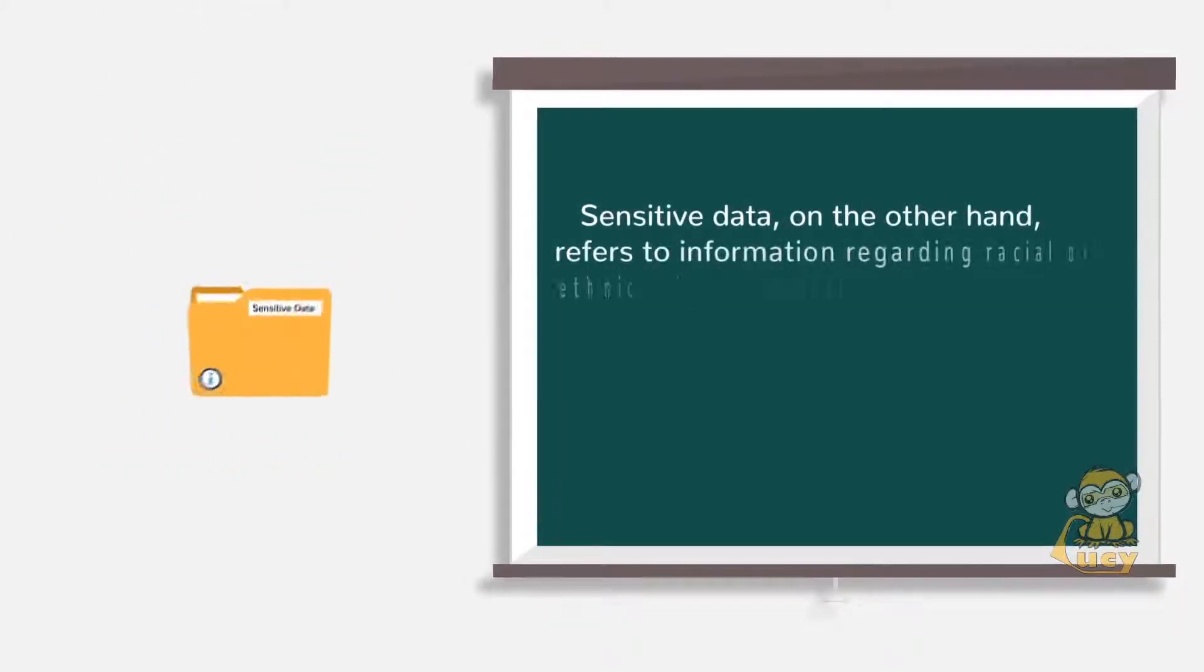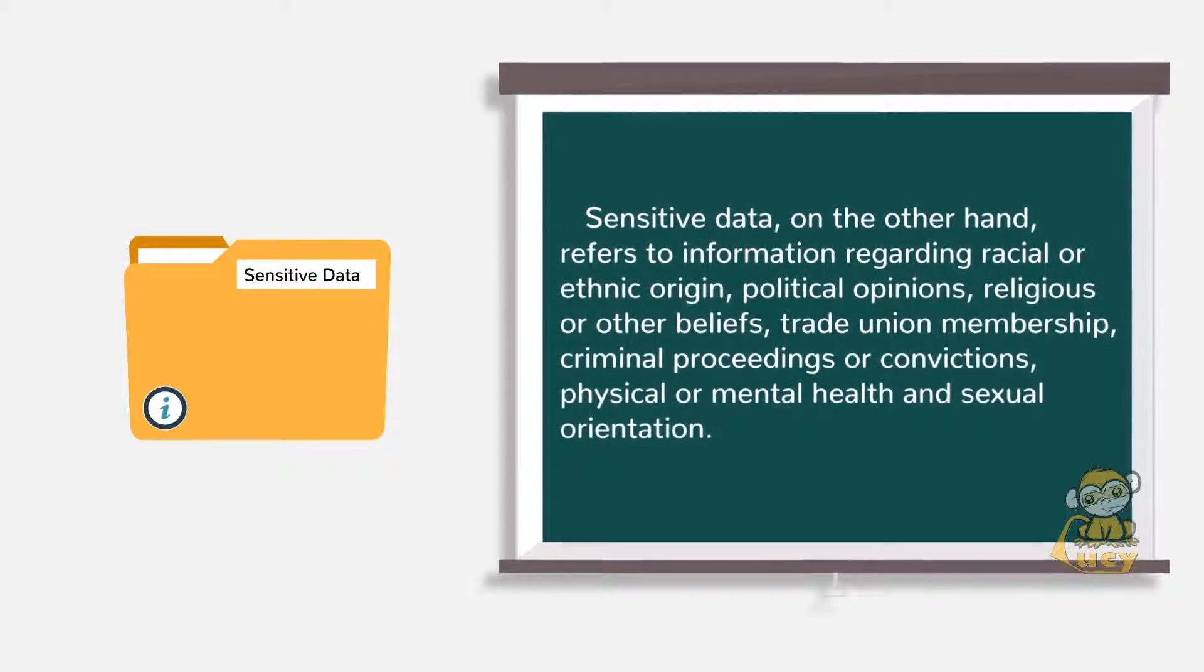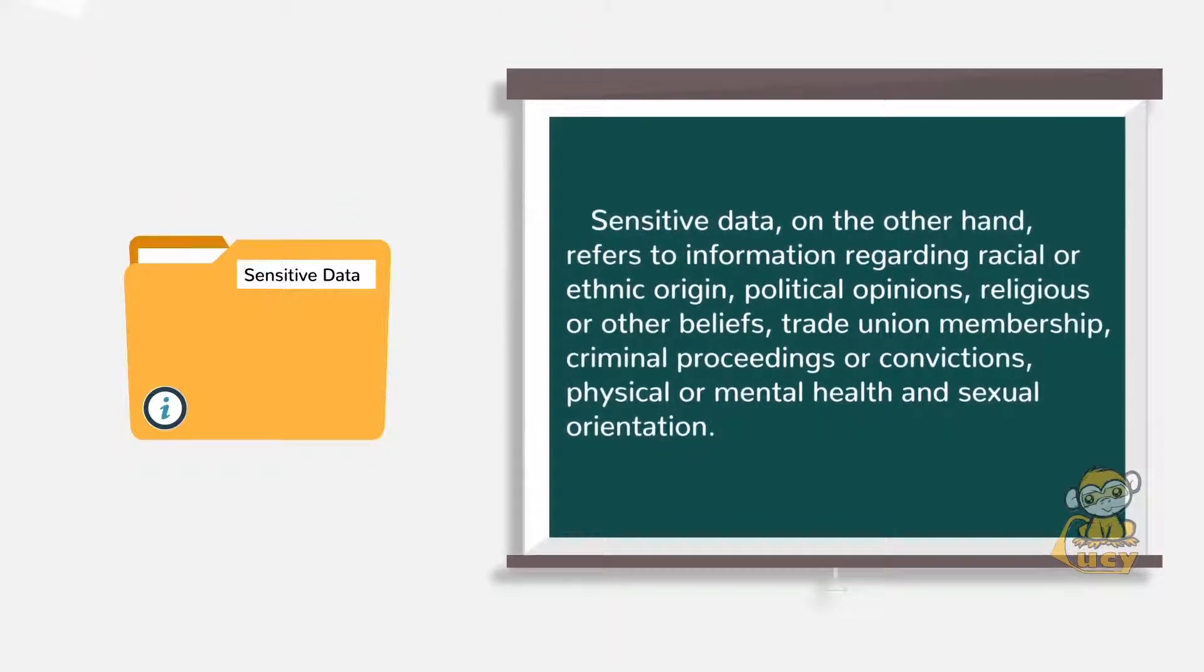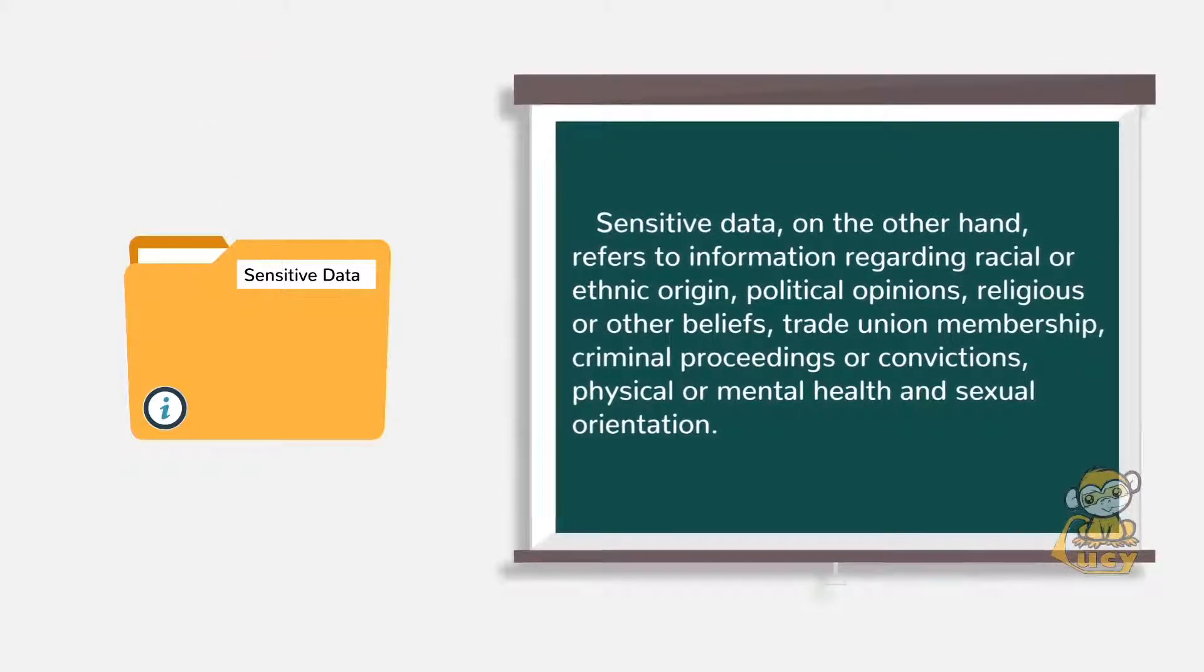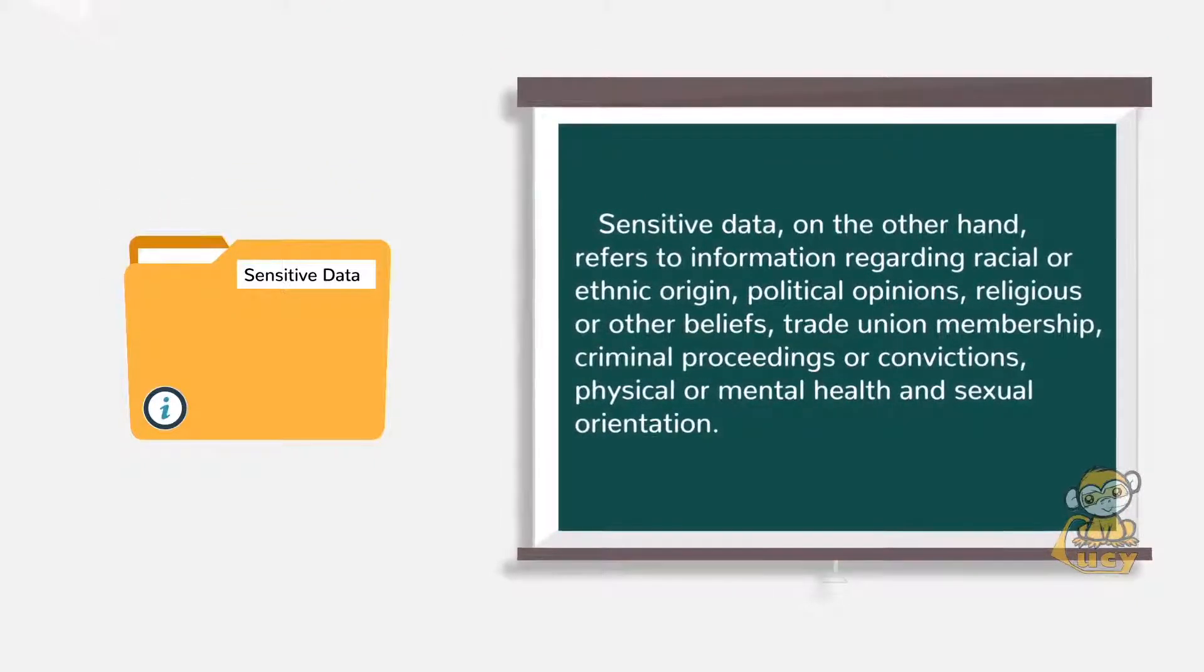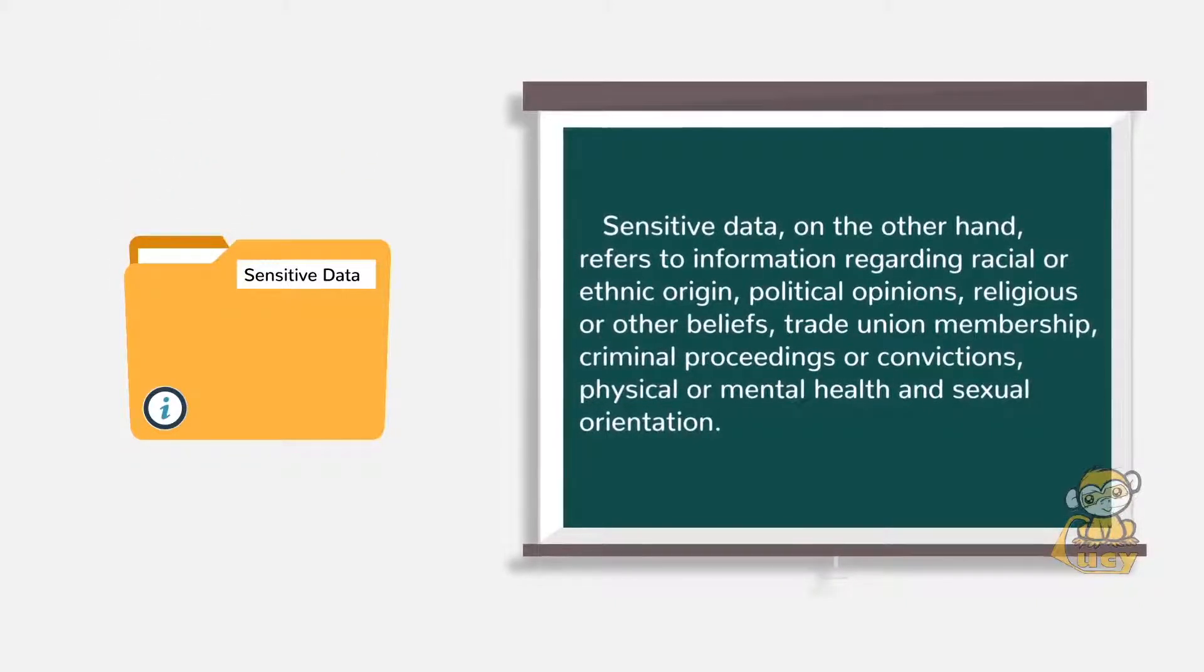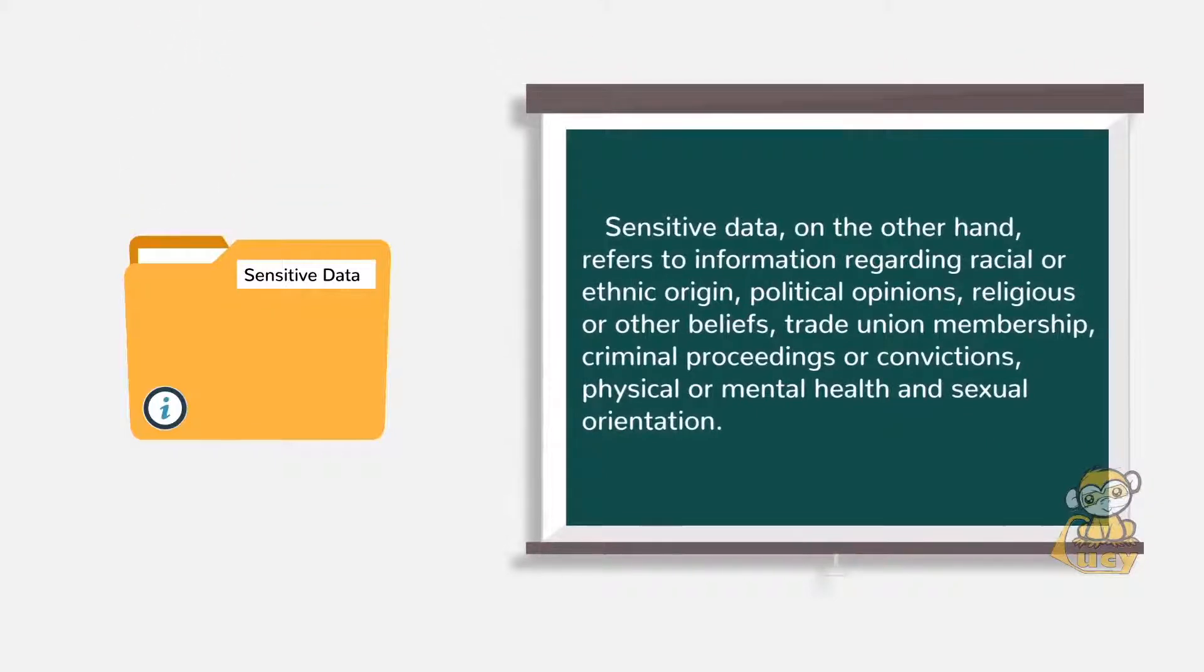Sensitive data, on the other hand, refers to information regarding racial or ethnic origin, political opinions, religious or other beliefs, trade union membership, criminal proceedings or convictions, physical or mental health, and sexual orientation. This is private information and could be used in a discriminatory manner. Therefore, the rules for processing sensitive data are much more rigorous.